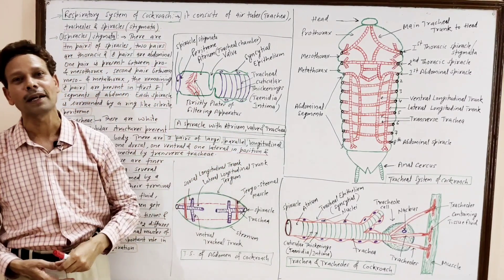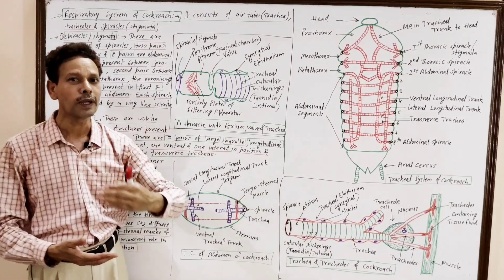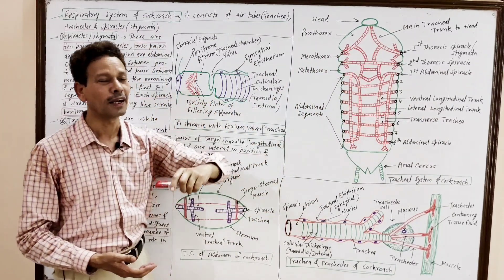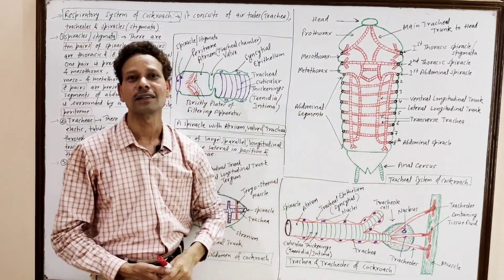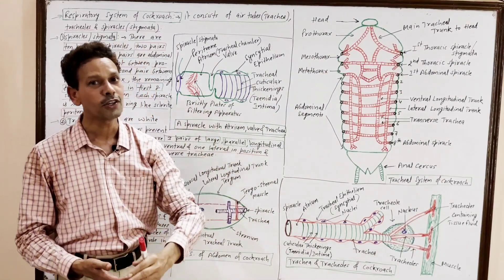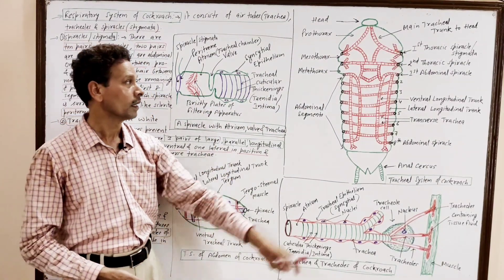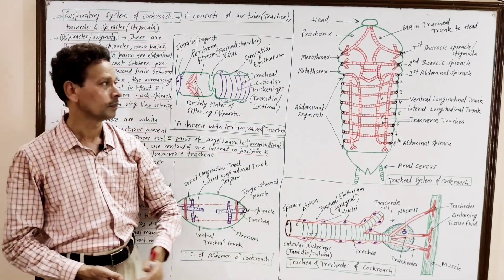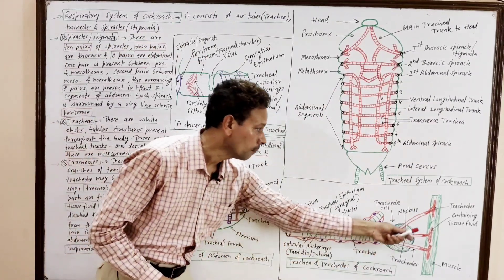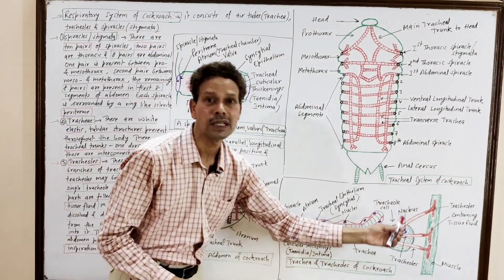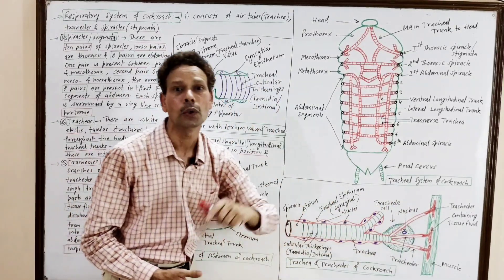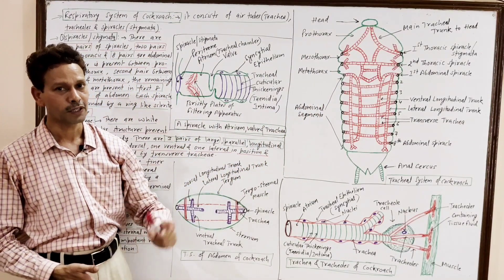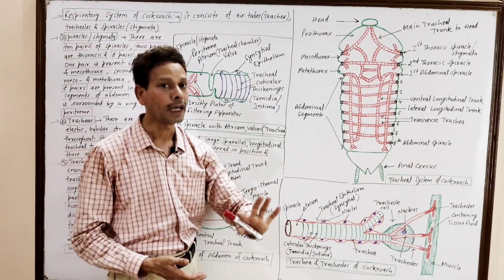Cockroach, insects, Periplaneta americana. As we know, in the case of insects, respiration takes place through special types of tubes. These air tubes are named trachea, and that kind of respiration is tracheal respiration. In cockroach, the respiratory system is divided into three parts: trachea, tracheals (the final or ultimate branches of trachea), and their openings called spiracles or stigmata.